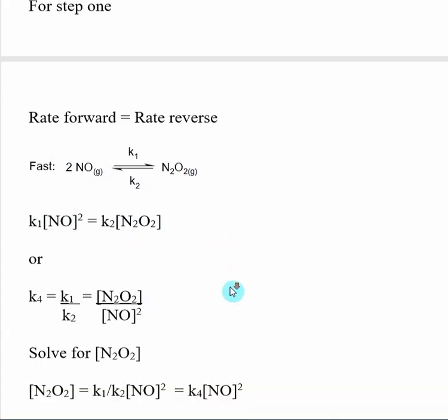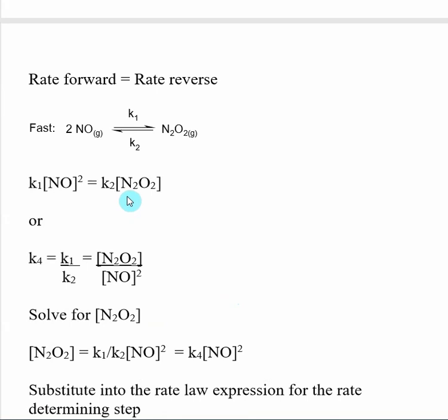Here to get started, we are going to want to isolate N2O2. This is the species that we want to get rid of in our rate law expression. We start out by just moving things around. K2 comes down here, the concentration of NO squared comes down here.